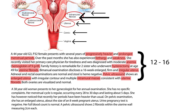Second vignette: a 39-year-old woman presents for annual gynecologic exam with no specific complaints. Her menstrual cycle is regular, every 28 to 30 days, lasting about five days, but she has noticed her periods have recently become heavier. On pelvic exam she has an enlarged uterus about the size of an eight-week pregnant uterus; pregnancy test is negative. Full blood count is normal. Pelvic ultrasound shows two fibroids within the uterine wall measuring two centimeters each — another presentation of uterine fibroids.